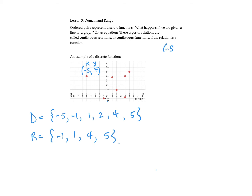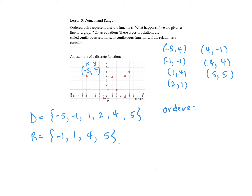Writing these out as ordered pairs: negative 5 comma 4; negative 1 comma negative 1; 1 comma 4; 2 comma 1; 4 comma negative 1; 4 comma 4; and 5 comma 5. The x-coordinates are in the domain and the y-coordinates are in the range. You don't need to write a number twice — if it appears twice, write it once. So if your relation is given as ordered pairs or points, the domain and range will be a list of numbers.